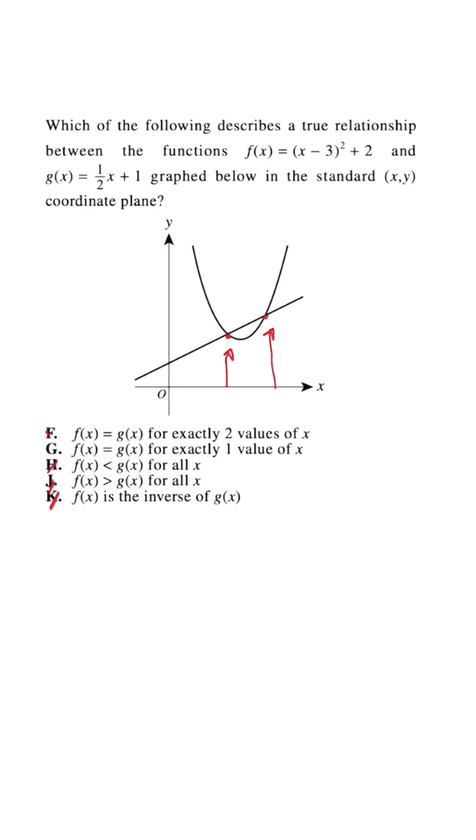So this is why the answer choice would be F because we know that F of X and G of X have two exact values for X. That's why there's two points of intersection. If there was one, then we'll probably go with answer choice G.